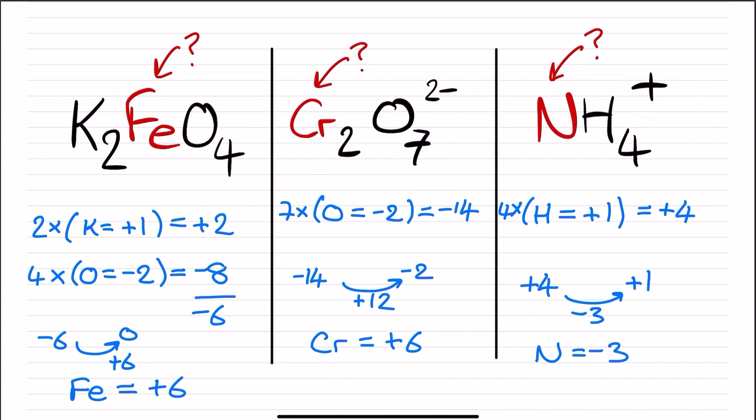The gap between the positive one on the ammonium and the positive four we currently have needs to be bridged by the nitrogen, and so the nitrogen needs to be negative three.